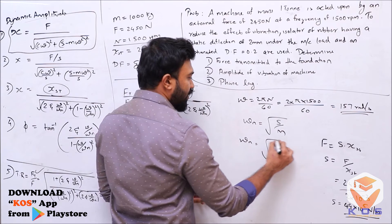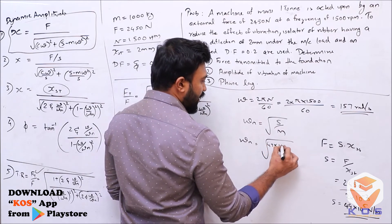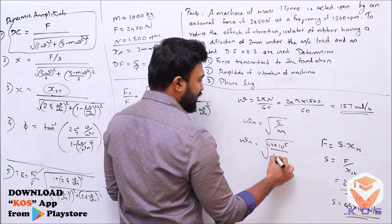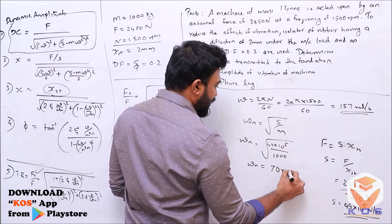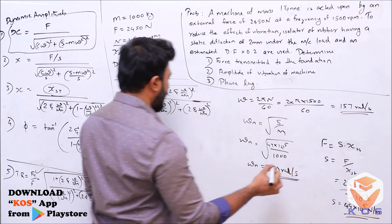If we substitute, omega_n = square root of (49×10^5 / 1000), so omega_n equals 70 radians per second.